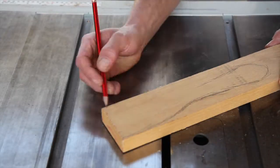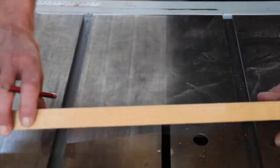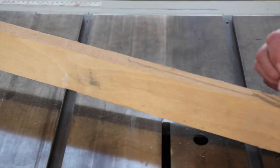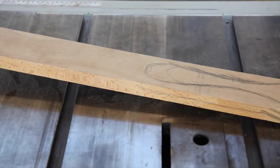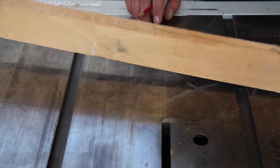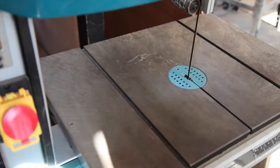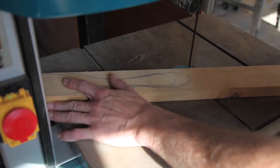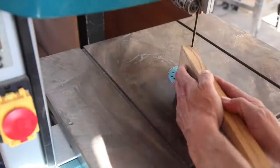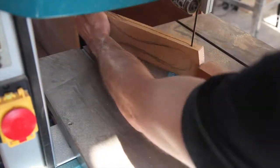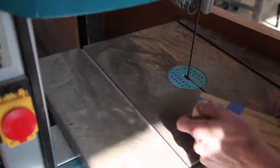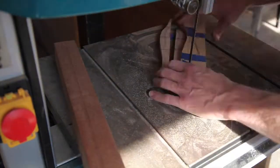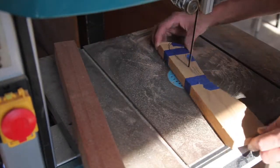I draw out a rough fork and take it to the bandsaw. If you don't have a bandsaw, you can use a coping saw.